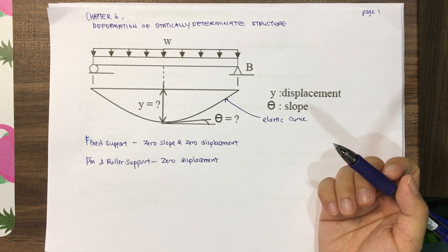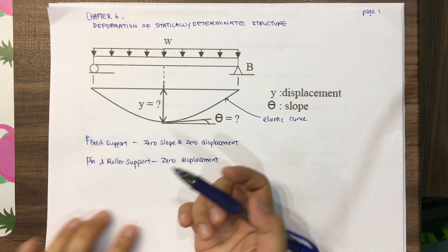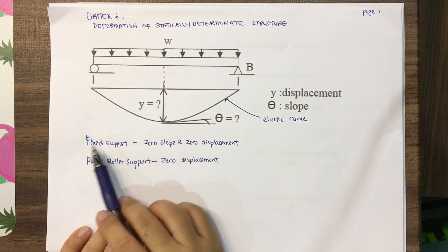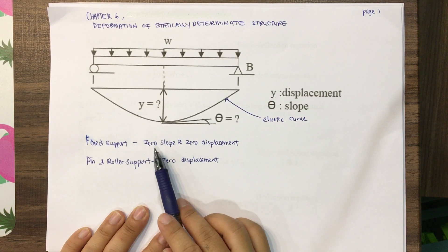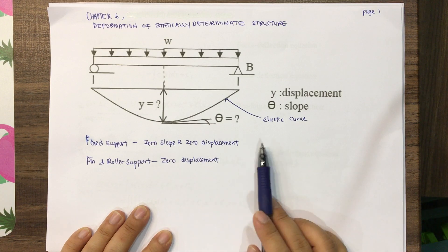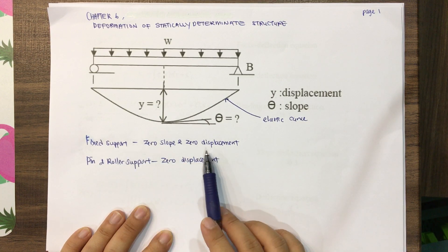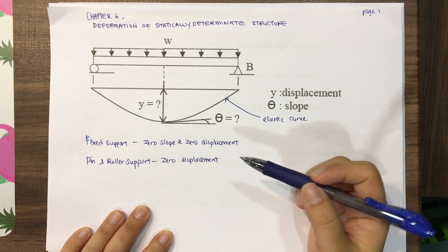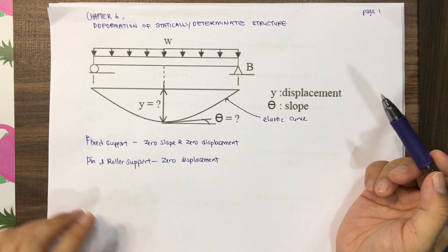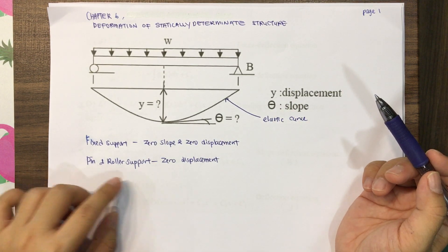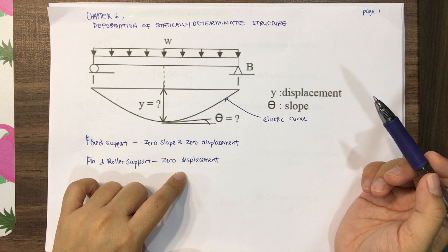We need to know about the boundary conditions for the supports. For a fixed support, there will be zero slope and zero displacement, because at a fixed support you will not have any displacement or slope. For pin and roller supports, you will have zero displacement.